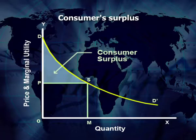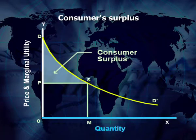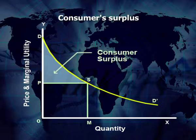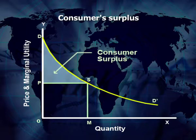Let us understand consumer surplus with the help of a diagram. In this diagram, we can see on the X-axis we have quantity, and on the Y-axis, price and marginal utility are taken. At price OP, the consumer is purchasing OM amount of goods, and at point S, the consumer is in equilibrium. At point S, the consumer surplus becomes zero because the price the consumer is paying equals the marginal utility the consumer is getting. The shaded area PDS shows the total consumer surplus.